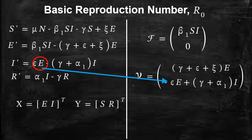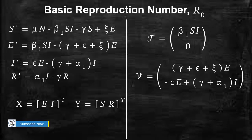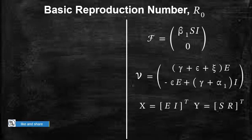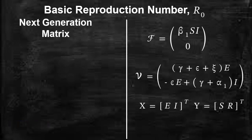This is how you form these two vectors. If you need the theory for this, please leave comments in the comment section so I can prepare a lecture on how to compute these two vectors. After having these two vectors, let's see what the next generation matrix looks like.